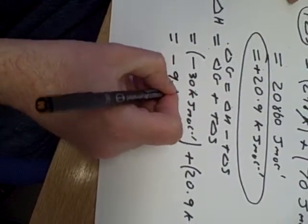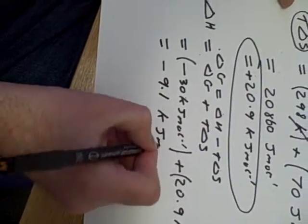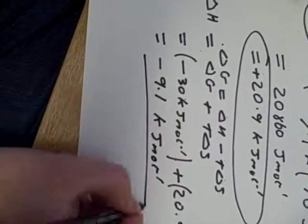So using the old calculator, minus 30 plus 20.9 gives an answer of minus 9.1 kilojoules per mole.